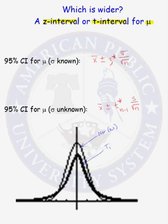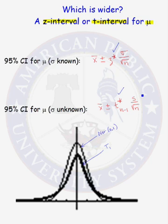Where do these formulas differ? X bar is the same in both. The critical values are different — one uses a z critical value from a normal distribution, the other uses a t critical value from a t distribution. Sigma and s differ, but for this particular problem, let's assume that sigma and s are equal. I want to compare the width of the intervals strictly on z star compared to t star.